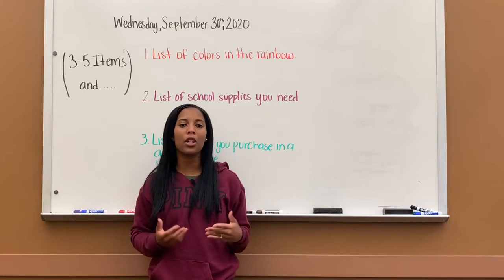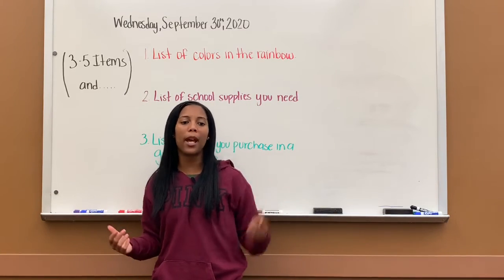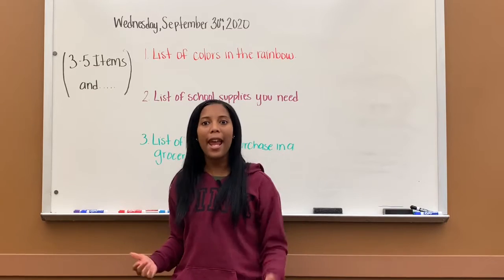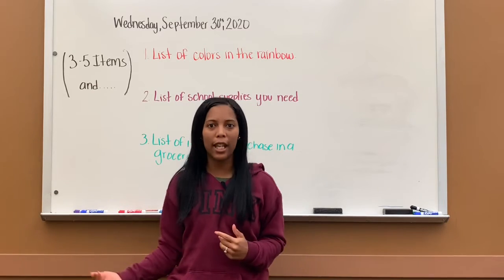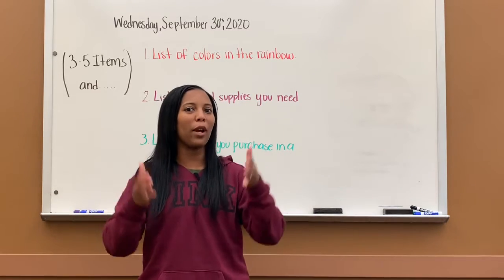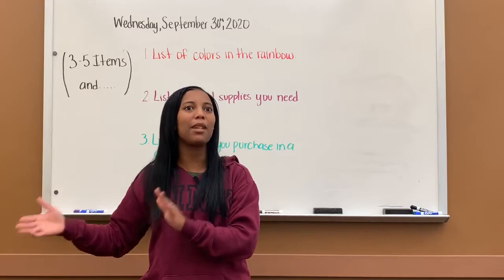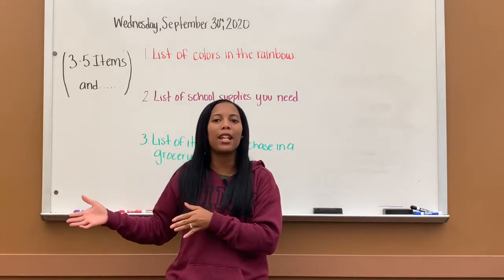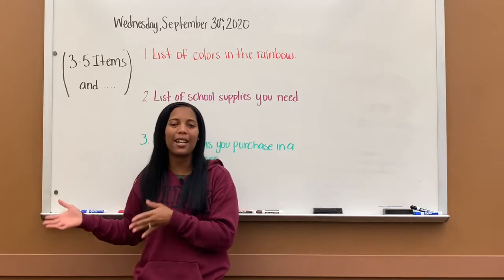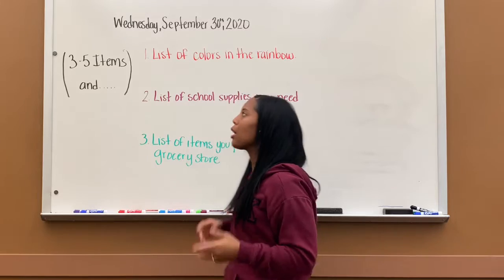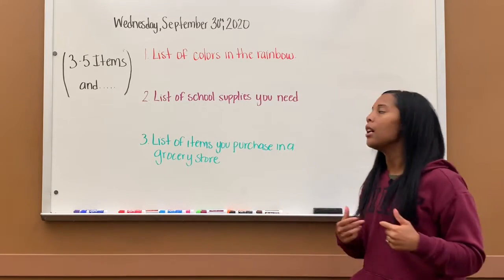So if I would say, I went to the grocery store and I bought a bag of chips, a soda, and a candy bar. You see how right before I said 'candy bar,' I put 'and' because candy bar was my last thing. So just make sure that you do that whenever you form your sentences.